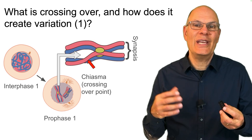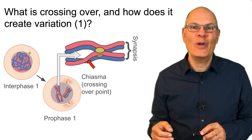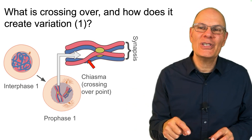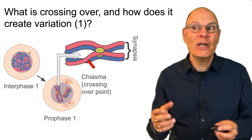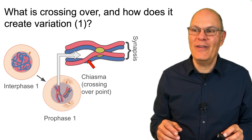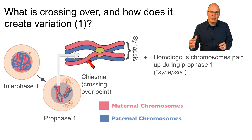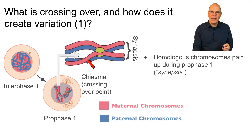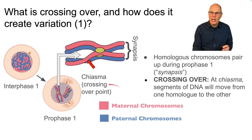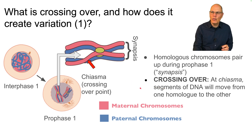Independent assortment is a phenomenal engine for creating diversity, but there's yet another one in meiosis — that's crossing over. When those homologous pairs pair up during prophase 1, they don't only embrace; they embrace so intensely that they actually exchange parts. This embrace is called synapsis, and at a point called a chiasma, segments of DNA will move from one homolog to the other.